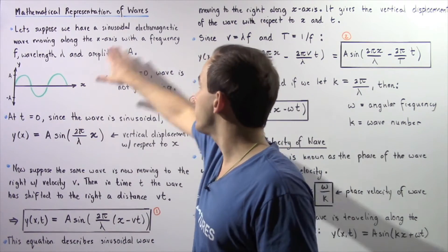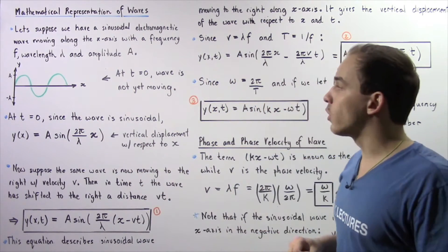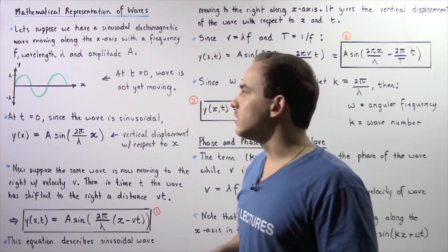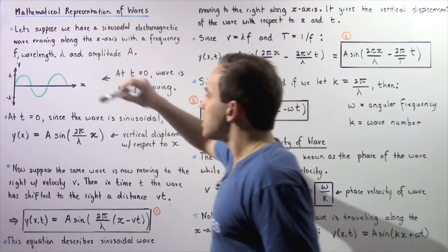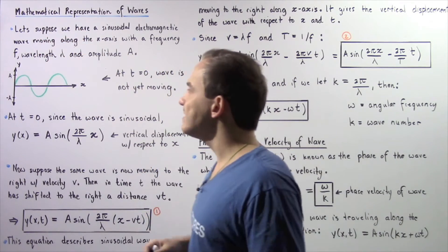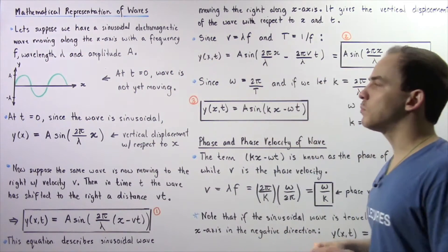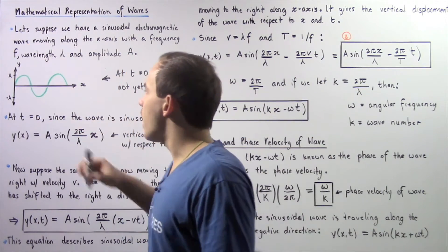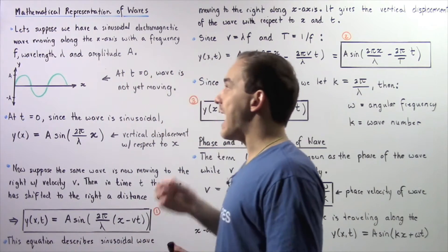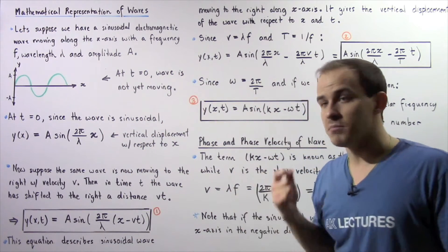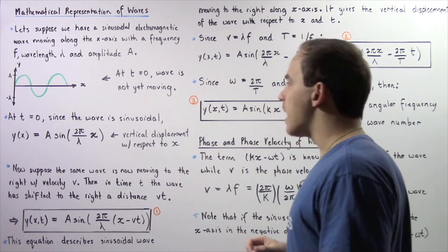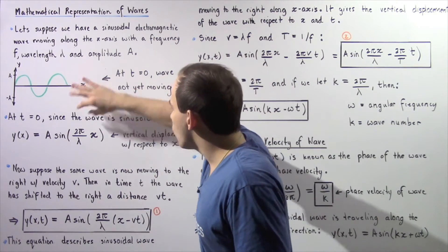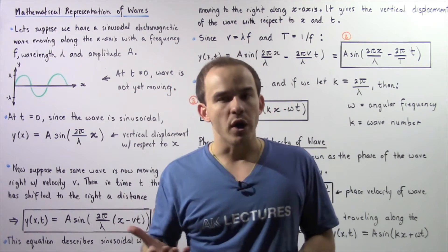We can represent our wave on the x-y axis as shown in the diagram. If we're examining an electromagnetic wave, we're only examining the electric field, not the magnetic field. This line represents the motion of our propagating wave. The y-axis shows A, the maximum vertical displacement, or amplitude. At t equals zero, since the wave is sinusoidal, we can represent it with an equation.